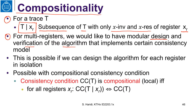We will be restricting ourselves to sequential consistency and linearizability. This is possible if we can design the algorithm for each register in isolation — thinking only of one register. If we satisfy the consistency condition for that register, we can then conclude it is satisfied for multi-register executions. This is possible with a compositional consistency condition.